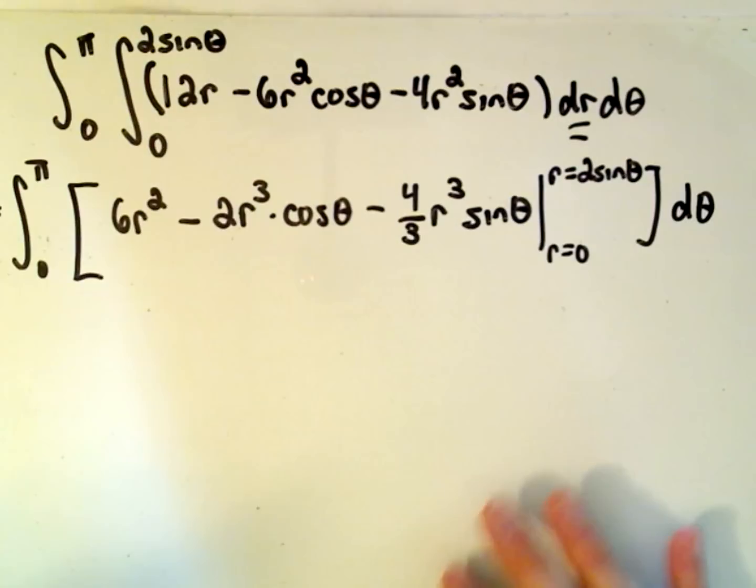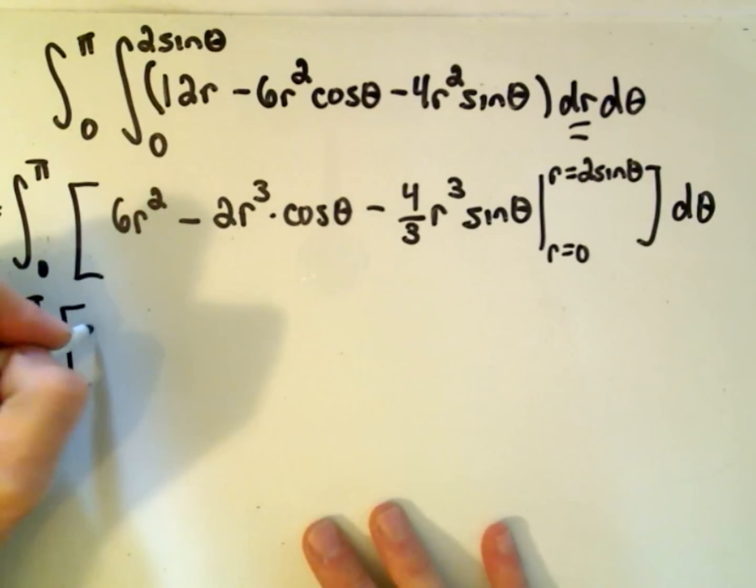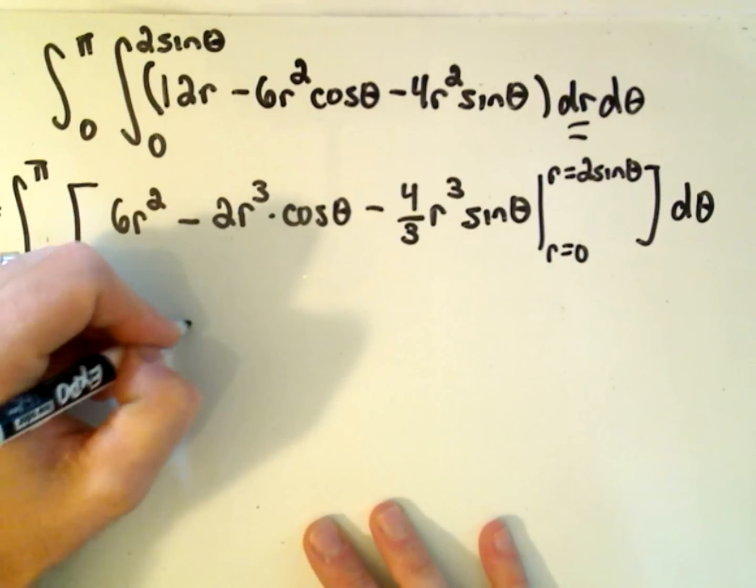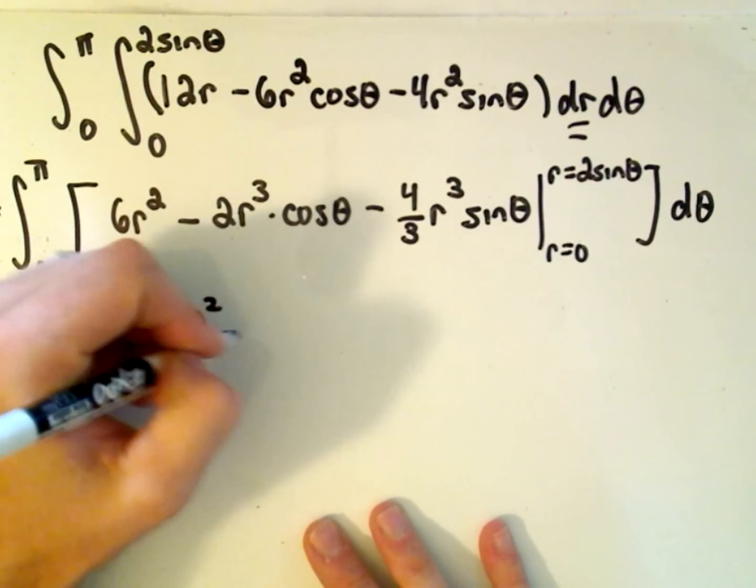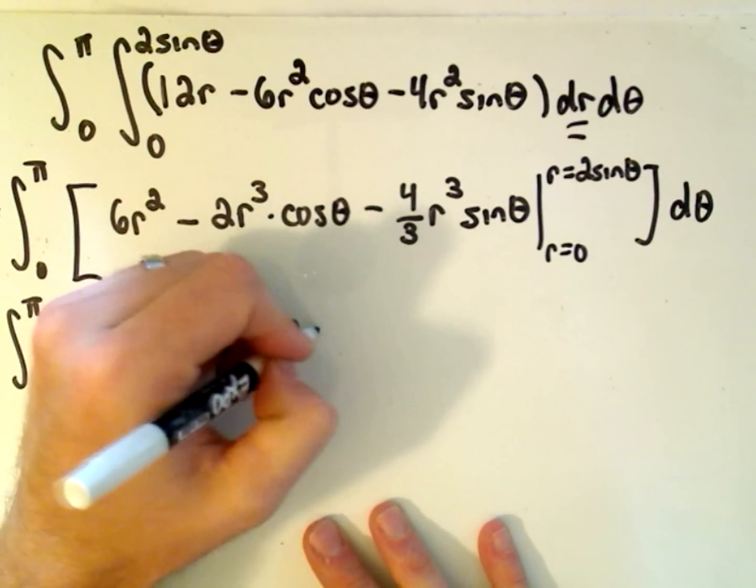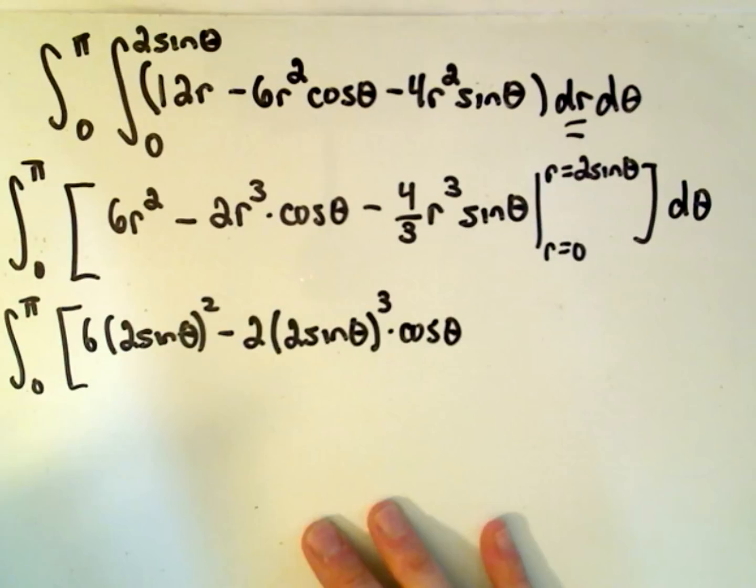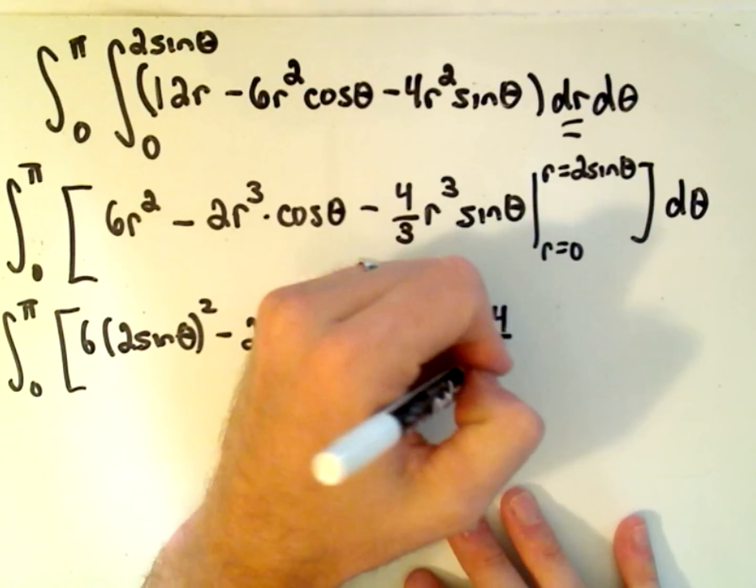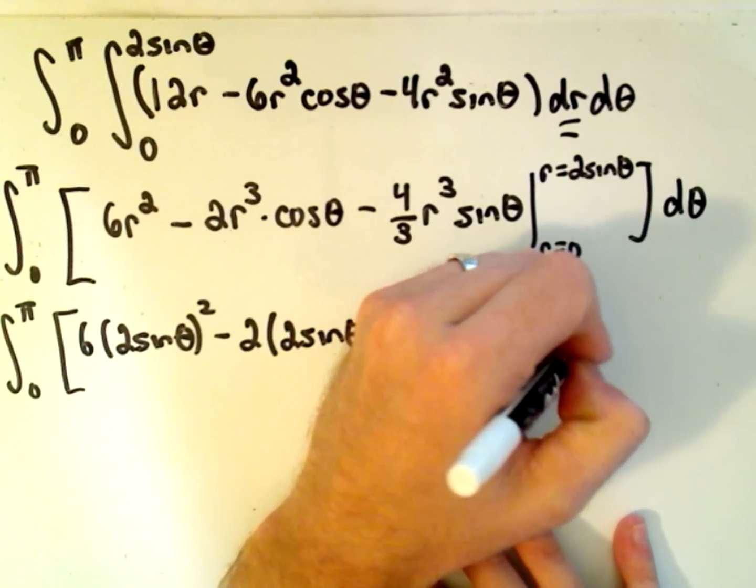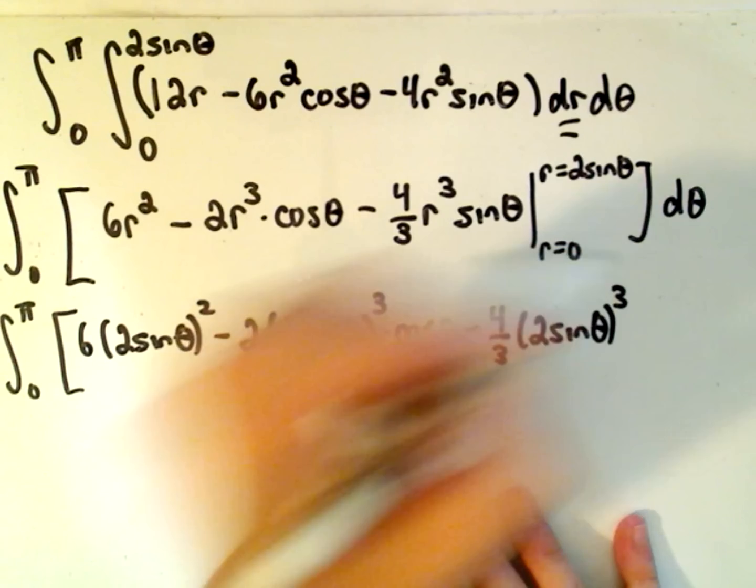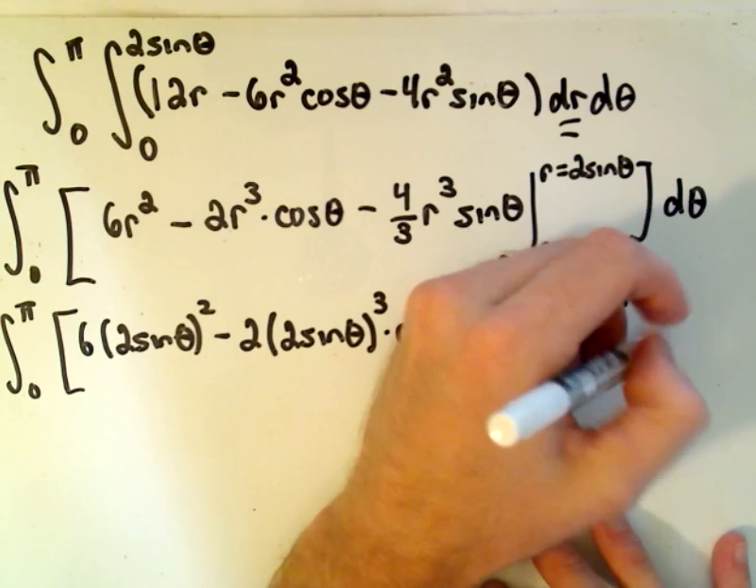And then it looks like we would get minus 4/3 r³ times sinθ. Okay, so now we have to evaluate this from r equals 0 to r equals 2sinθ. And then we have to integrate all of that with respect to θ. So hopefully I won't make any crazy algebra mistakes here.